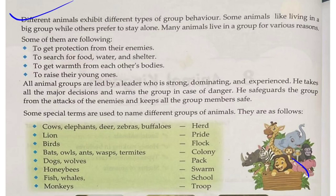Different animals exhibit different types of group behavior. Some animals like to live in a big group, while others prefer to stay alone. Many animals live in a group for various reasons, some of which are the following.